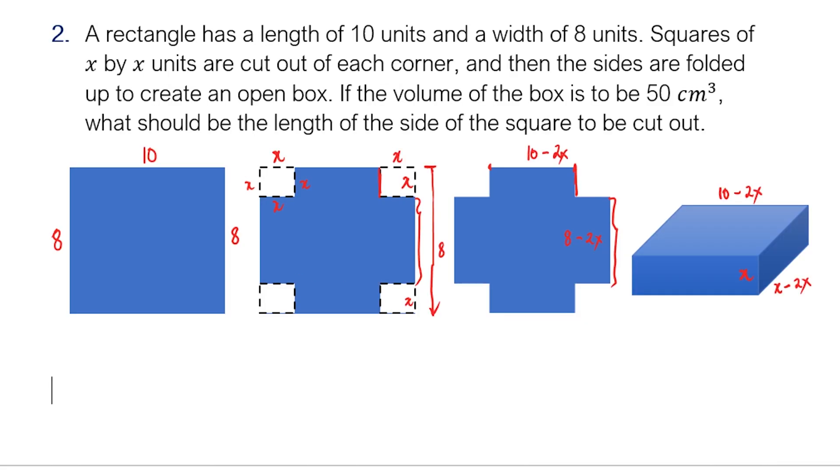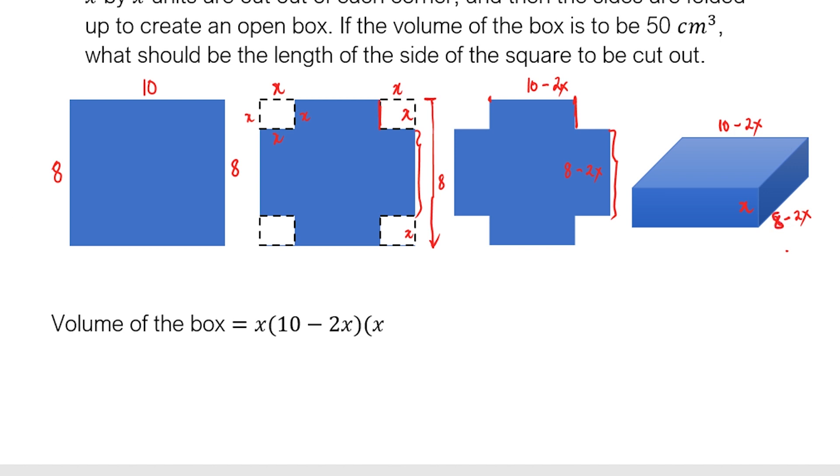Now, let's compute the volume of the open box. The volume of the box is equivalent to the product of all the measurements or the product of the dimensions. So it's equivalent to x—that's the height—times 10 minus 2x, that's the length, times 8 minus 2x. That should be 8 minus 2x.